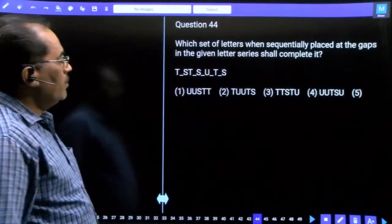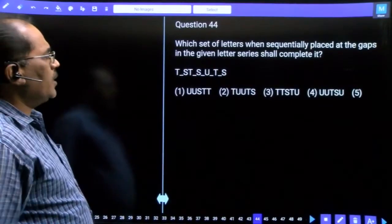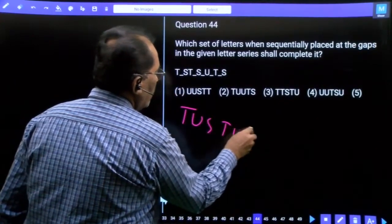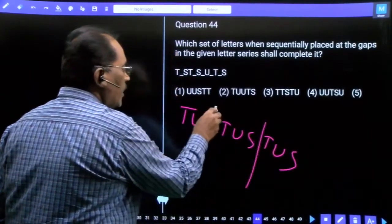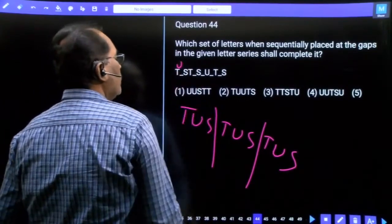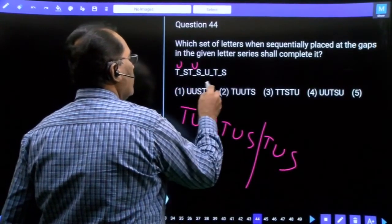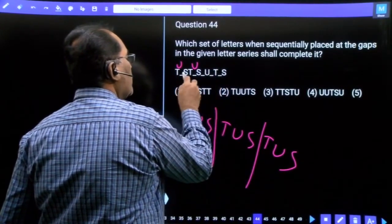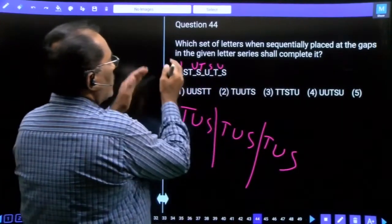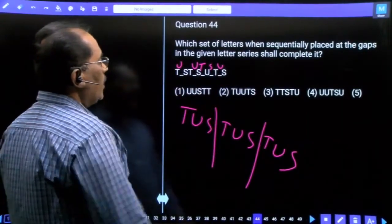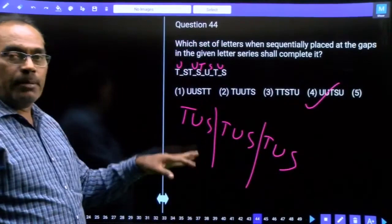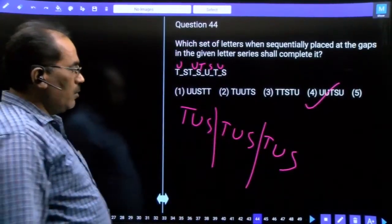Question 44, this is a repeated series. The combination pattern is TUS, TUS, TUS. Three letter combination group repeated. In the gaps, we need TUS. Here is S, here is U. Final answer is WTSU, fourth option. The combination is TUS, TUS, TUS.